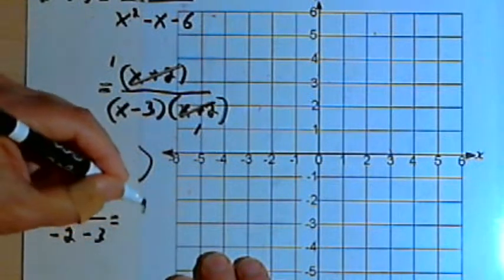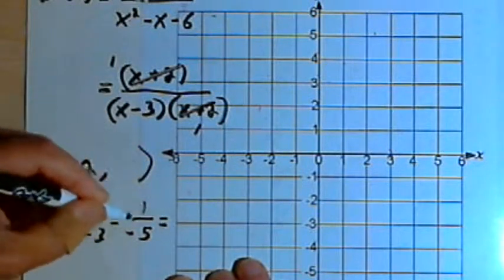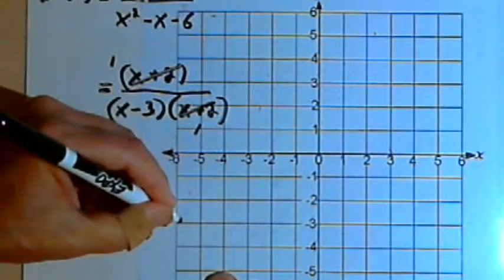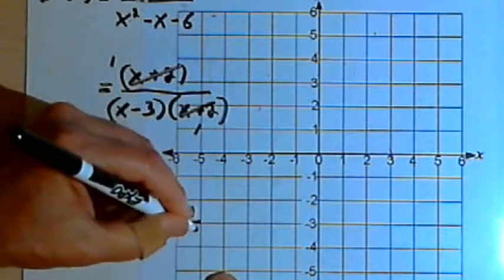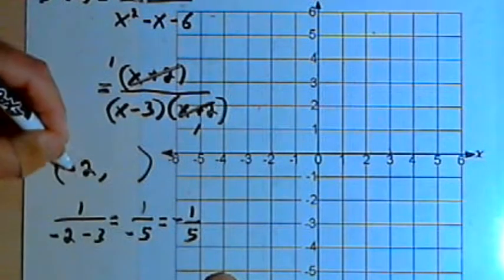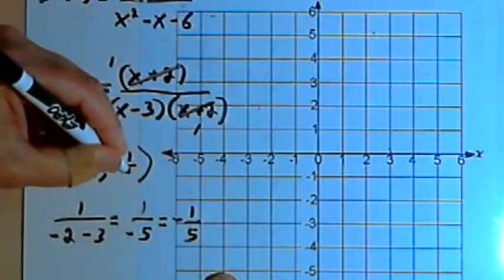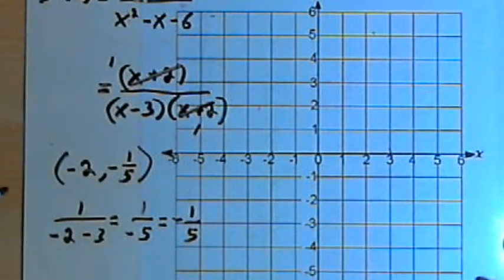So negative 2 minus 3 is negative 5. I've got 1 over negative 5, which is the same as negative one-fifth. So my hole is going to occur at negative 2, comma, negative one-fifth. And now I can sketch the graph.